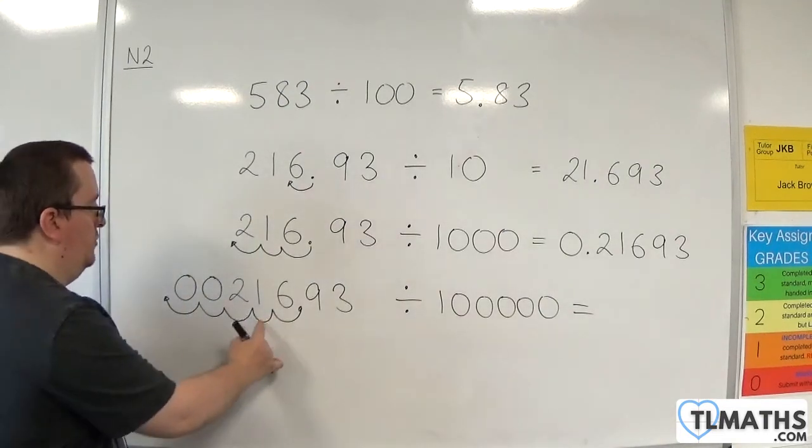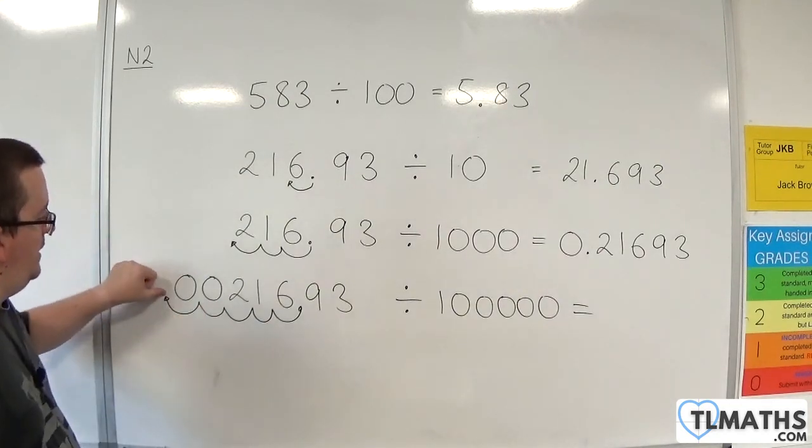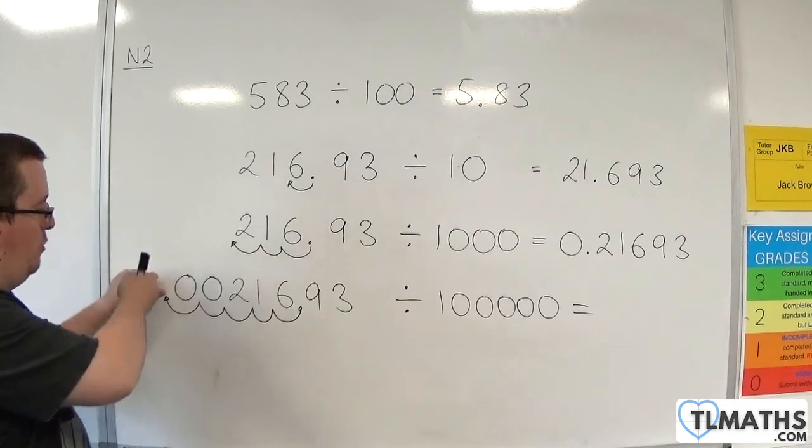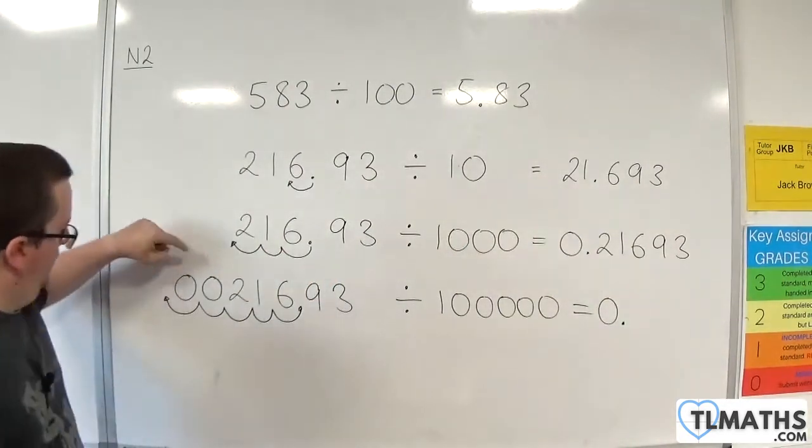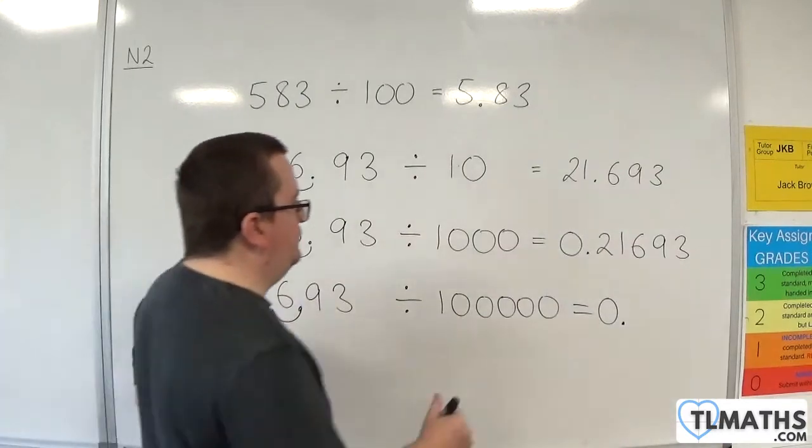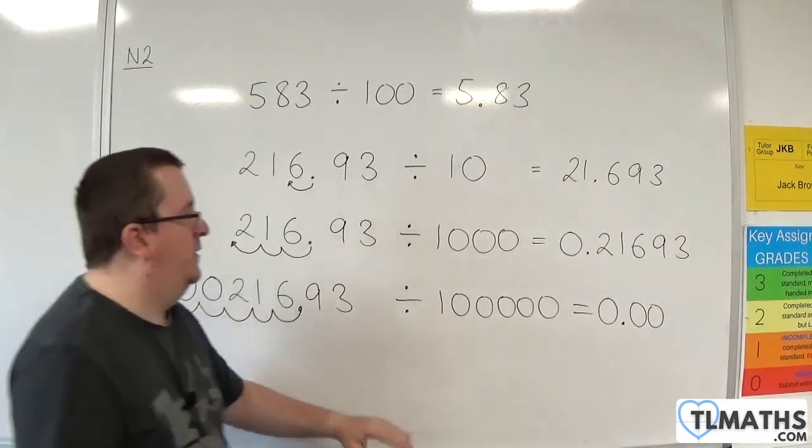So one, two, three, four, five. So because my decimal point is there and I want to write it as zero point. So zero point, zero, zero, two, one, six, nine, three.